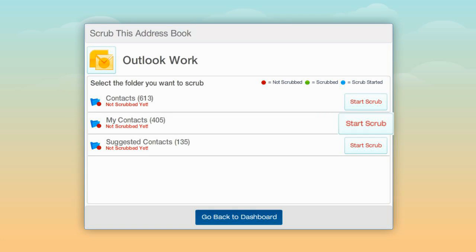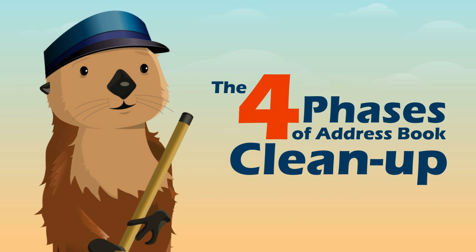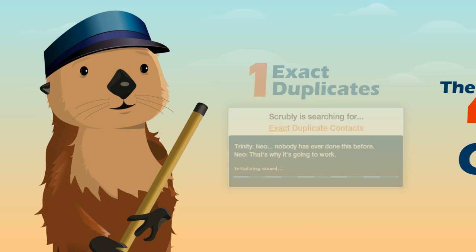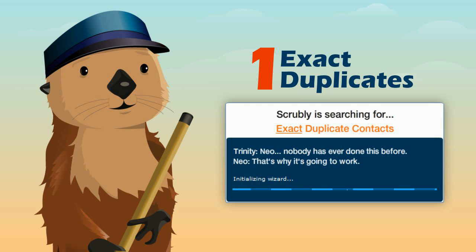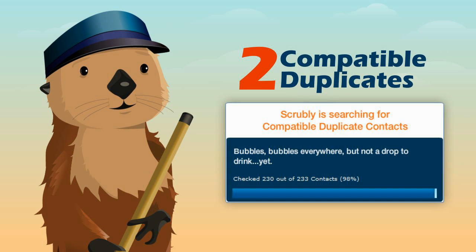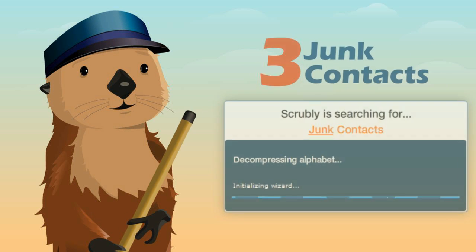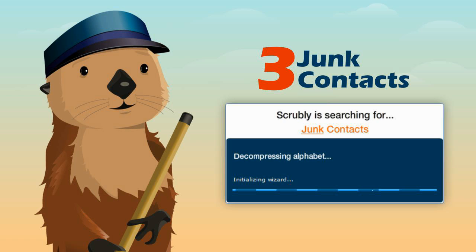Click the Start Scrub button and Scrubly will walk you through all the steps involved with cleaning your contacts. We do this in phases to help you get the most out of the process and ensure that the contacts you want to merge or delete are correct. These steps include scanning for exact duplicate contacts, then compatible duplicate contacts which are contacts that can automatically be merged together without any issues, then junk contacts which are contacts that only contain an email address but no other information and can easily be discarded.